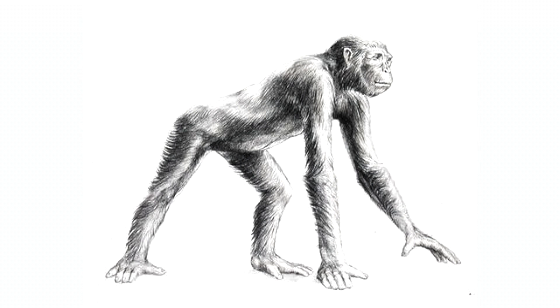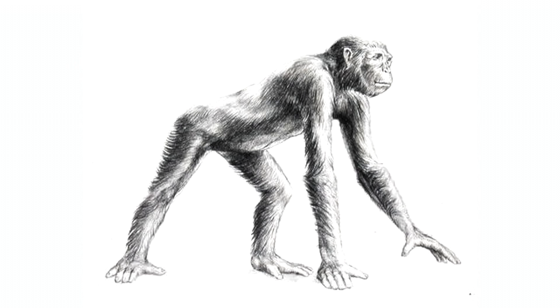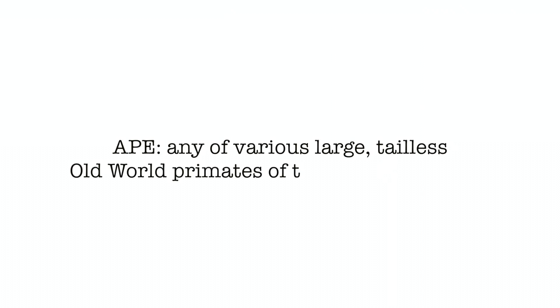It then took another 20 million years until our next ancestor came to be, the Dryopithecus. Now this guy might look a little bit like a chimpanzee, but he's not. He's actually an ancestor of all kinds of apes that live today. An ape is any of various large, tailless, old-world primates of the family Pongidae, including the chimpanzee, gorilla, gibbon, and orangutan.